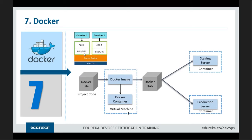Docker is lightweight because containers contain the app plus all libraries and dependencies required to run it, and multiple containers share the same Docker engine on the host — they do not each house their own operating system. The workflow is: create project code, build a Docker image, place the image inside a Docker container, upload to Docker Hub, and then deploy to multiple staging and production servers as required.